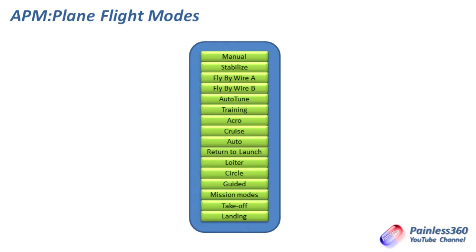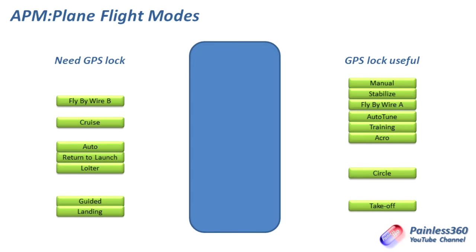It's interesting to split these flight modes out into ones that need a GPS lock and ones that don't. A lot of the modes explicitly need GPS — things like fly-by-wire, cruise, auto, return to launch, loiter and others rely on GPS to maintain a heading, position or direction. The others don't strictly need GPS, but I would always recommend having GPS working.